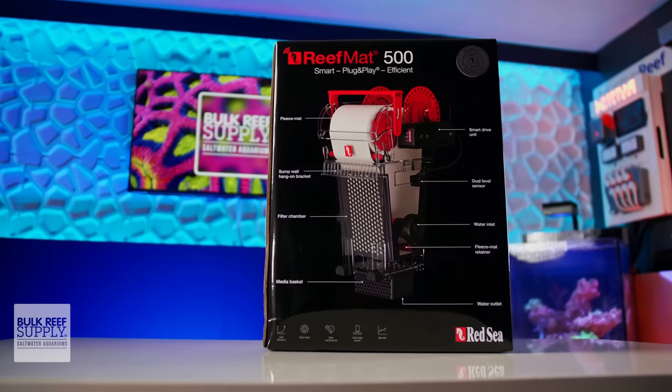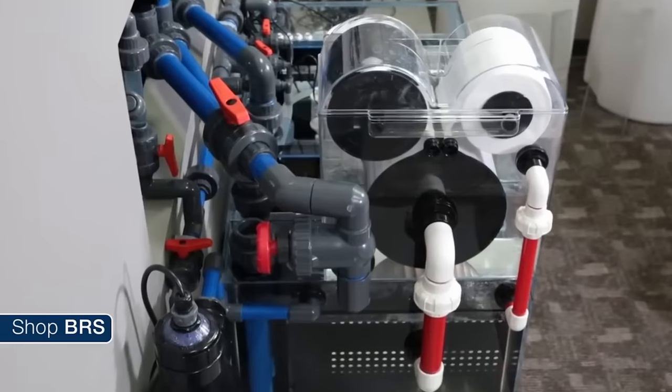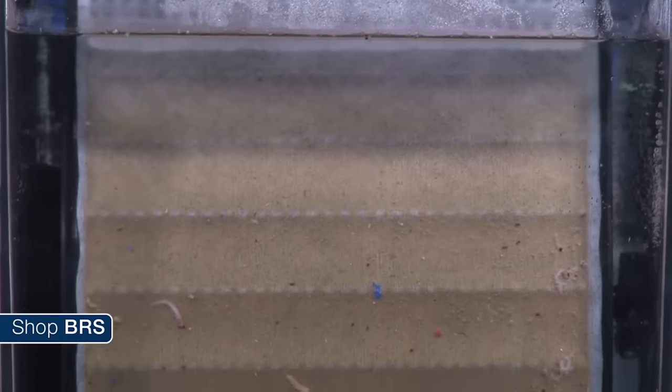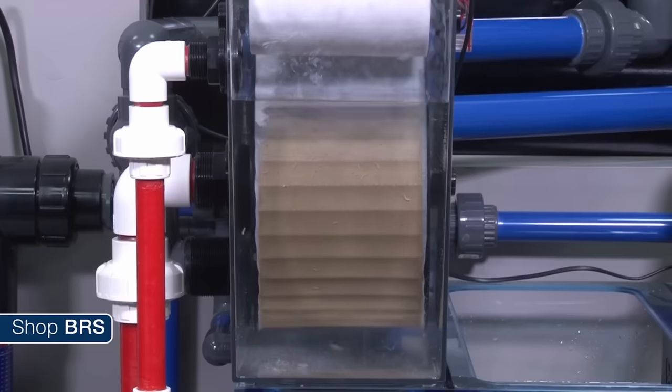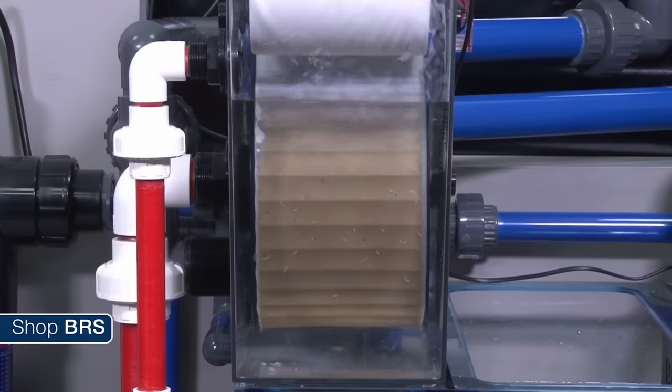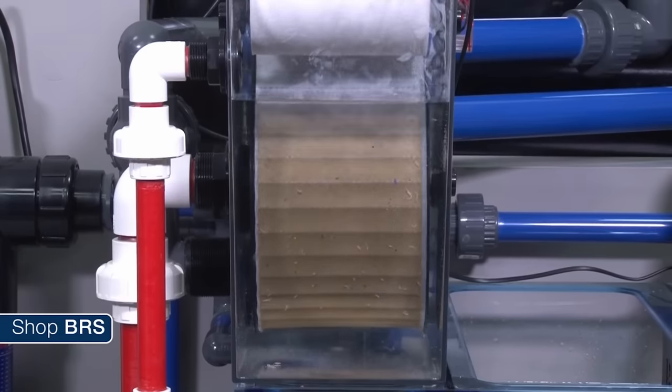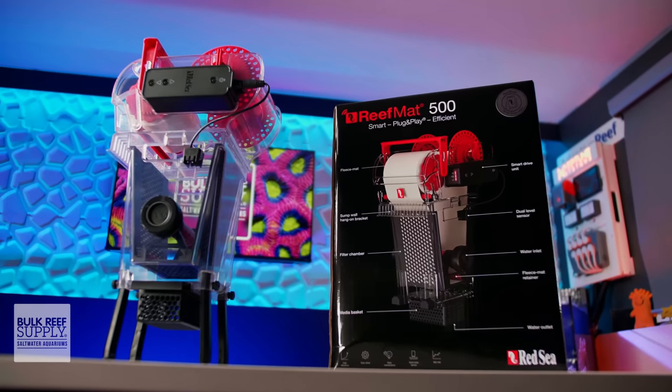I think the hobby has become pretty familiar with what a fleece roller is and how it works. Water from the overflow of your aquarium drains into the body, passes through a sheet of fleece and travels through the rest of the sump. As the fleece gets dirty, it raises the water level inside of the fleece roller and triggers a sensor that tells the motor to roll up some dirty fleece, exposing new fleece. It just beats the heck out of cleaning and swapping out filter socks.